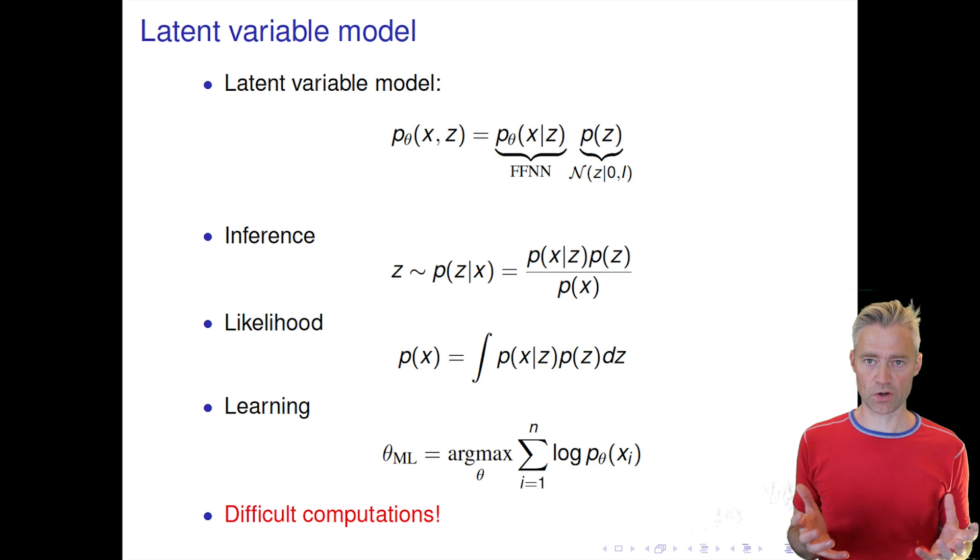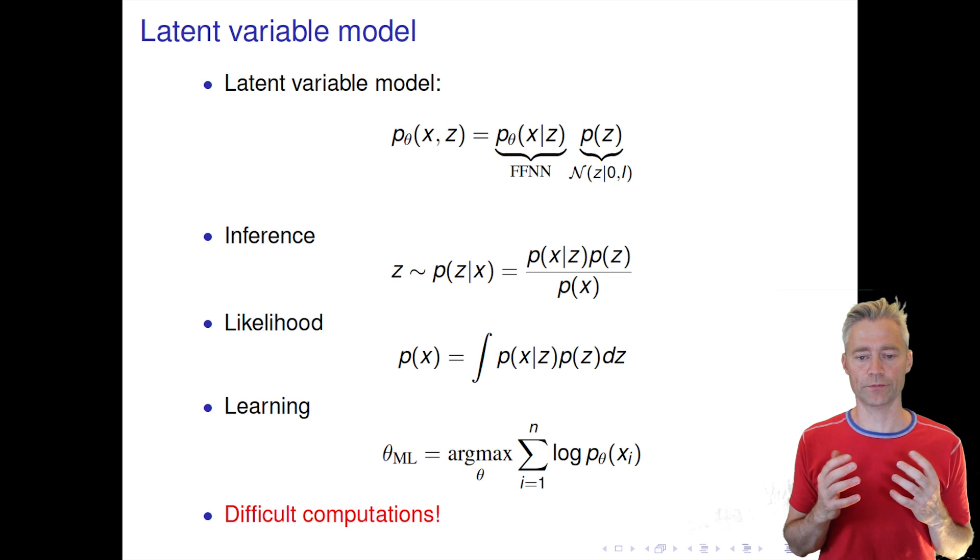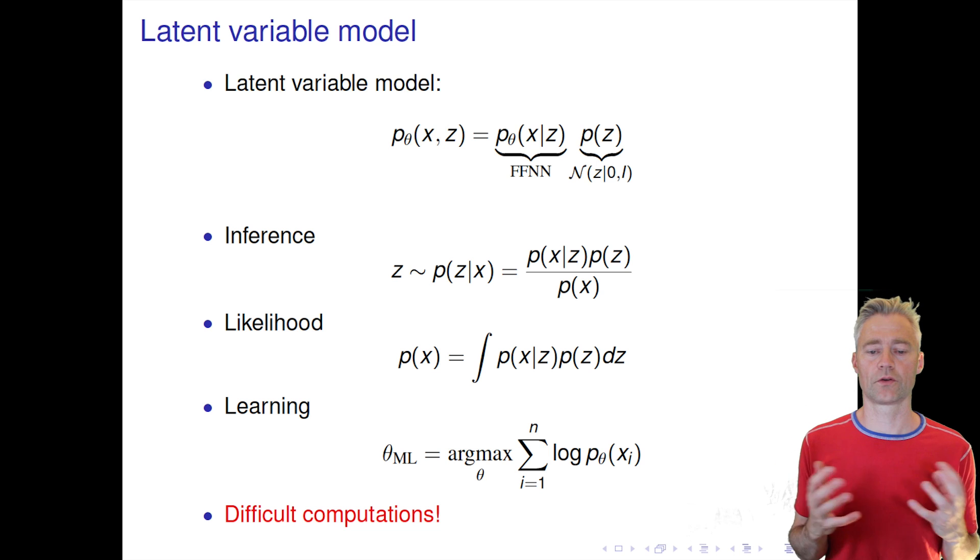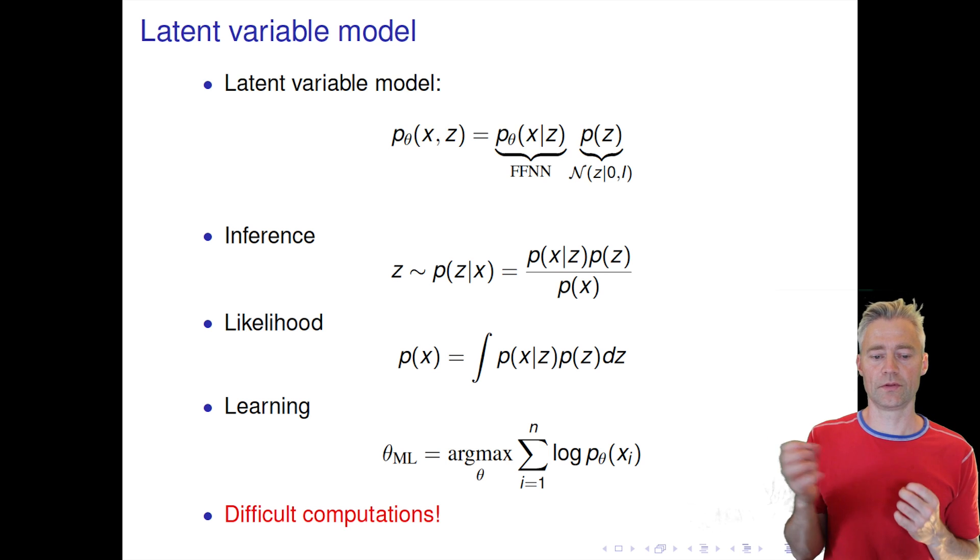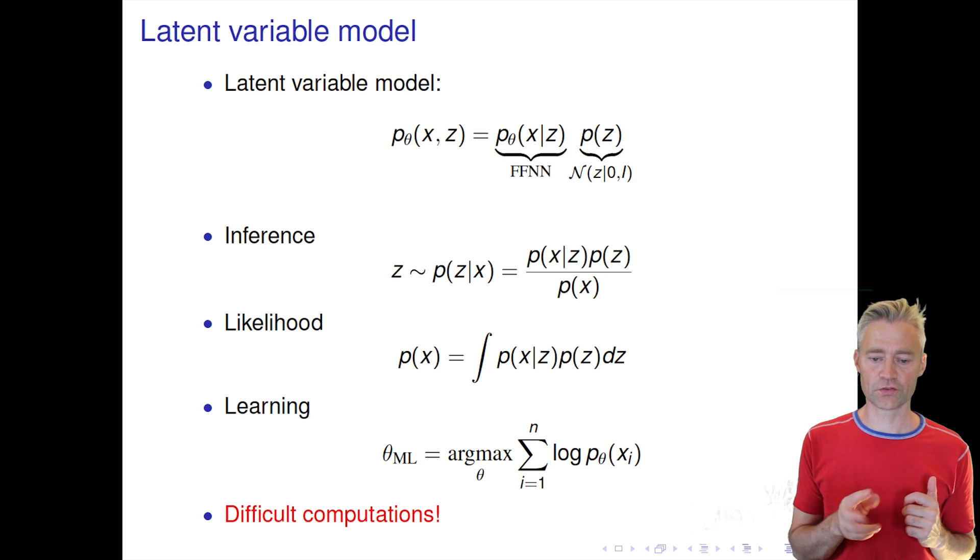But the model is quite attractive from the expressiveness point of view but it's very hard to learn this model. And learning consists of essentially three steps. We have an inference step, and that is finding the posterior distribution of z given an x. So you can see that that corresponds to reversing the conditionals using Bayes theorem. That is difficult.